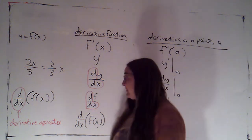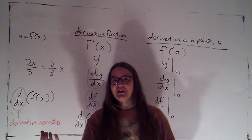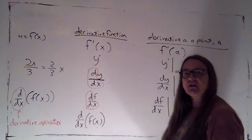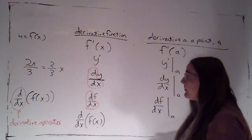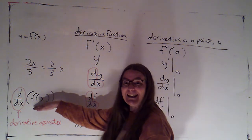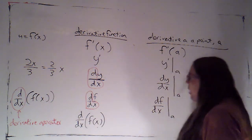Now it does turn out that this particular operator has a unique output. If a function has a derivative, that derivative is unique. But that's not part of the definition of an operator. An operator is just an ordered pair where the input, the first thing that you're plugging in, is itself a function.